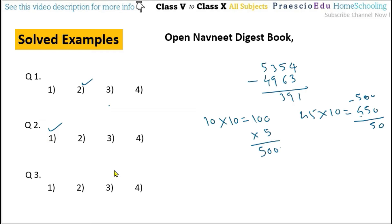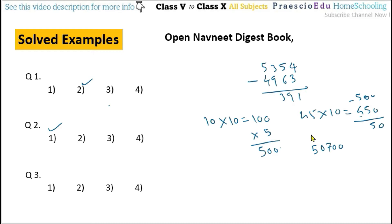Question number 3: Hari bought goods worth rupees 50,000 and spent 700 rupees on transportation. We add transportation to the purchase price, giving a total cost of rupees 50,700. He sold the goods for rupees 52,900, so the profit is 52,900 minus 50,700 equals rupees 2,200. This is given in option number 3.